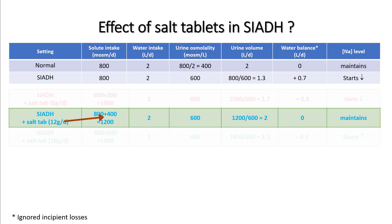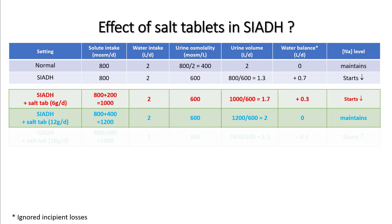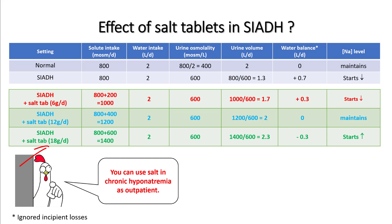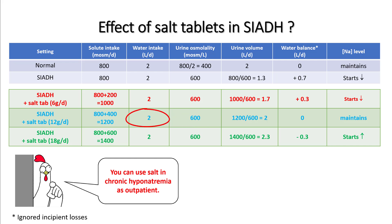The second method to raise sodium is salt tablets. Twelve grams of salt contains approximately 400 mOsm. This raises total solute intake to 1200 mOsm; with a urine osmolality of 600, the patient makes 2 liters of urine — matching a 2 liter intake and maintaining sodium. Adjusting the salt tablet dose shifts the water balance accordingly. Salt tablets are very useful for chronic hyponatremia in outpatients but can also be used in inpatients.